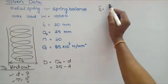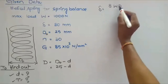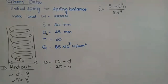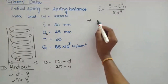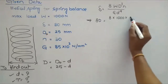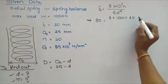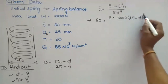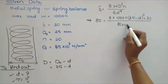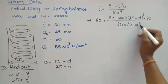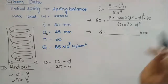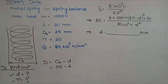Since deflection is given, use the deflection formula: δ = 8WD³n / (Gd⁴). Deflection equals 80, so: 80 = 8 × 1000 × (25 − d)³ × 30, divided by 85 × 10³ × d⁴. From this equation, only d is unknown. You have to calculate the d value.